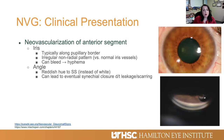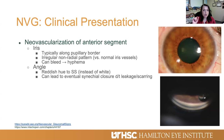How do these patients present? On slit lamp exam, presentation is characterized by neovascularization of the anterior segment, including neovascularization of the iris or iris rubiosis. These new vessels are typically along the pupillary border, thought to be because that part of the iris is exposed to the most VEGF and pro-angiogenic growth factors from the flow of aqueous along the pupillary edge. NVI vessels are often irregular in appearance and non-radial in pattern, in contrast to normal stromal iris vessels.